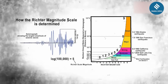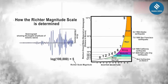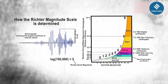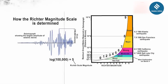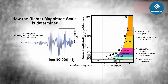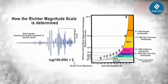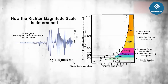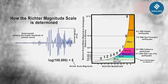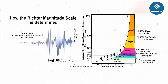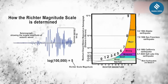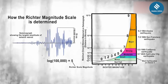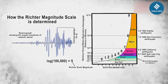The Richter scale runs from 0 to 10, with each whole number representing a tenfold increase in the amount of energy released. For example, a magnitude-6 earthquake releases 10 times more energy than a magnitude-5 earthquake.